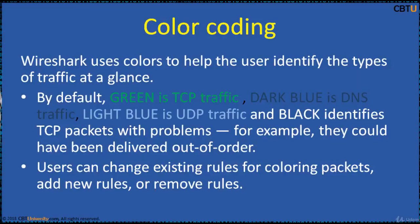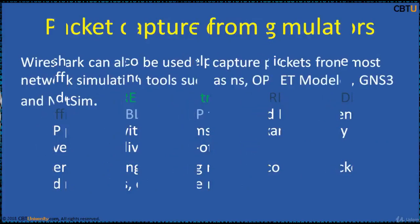Wireshark uses colors to help the user identify the types of traffic at a glance. By default, four colors are used: green for TCP traffic, dark blue for DNS traffic, light blue for UDP traffic, and black identifies TCP packets with problems — for example, they could have been delivered out of order. Users can customize existing color rules for packets and add new rules or remove rules.